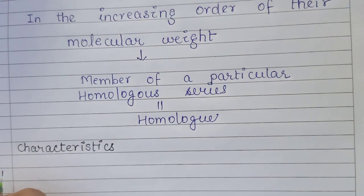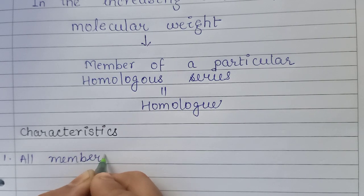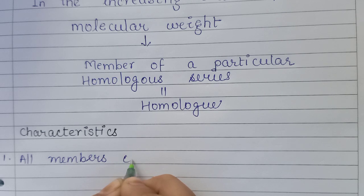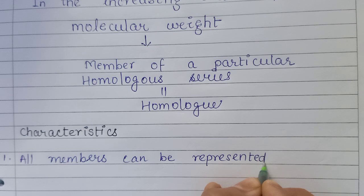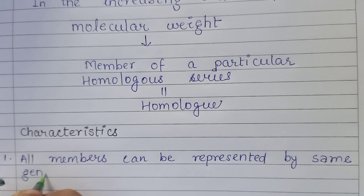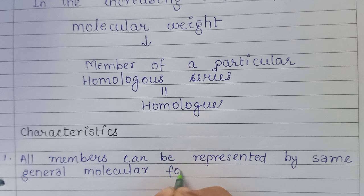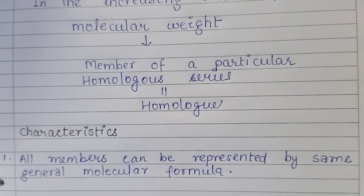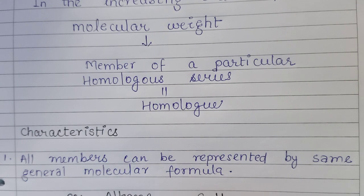The first characteristic: all members of a homologous series can be represented by the same general molecular formula. For example, the general molecular formula of alkanes is CnH₂ₙ₊₂.